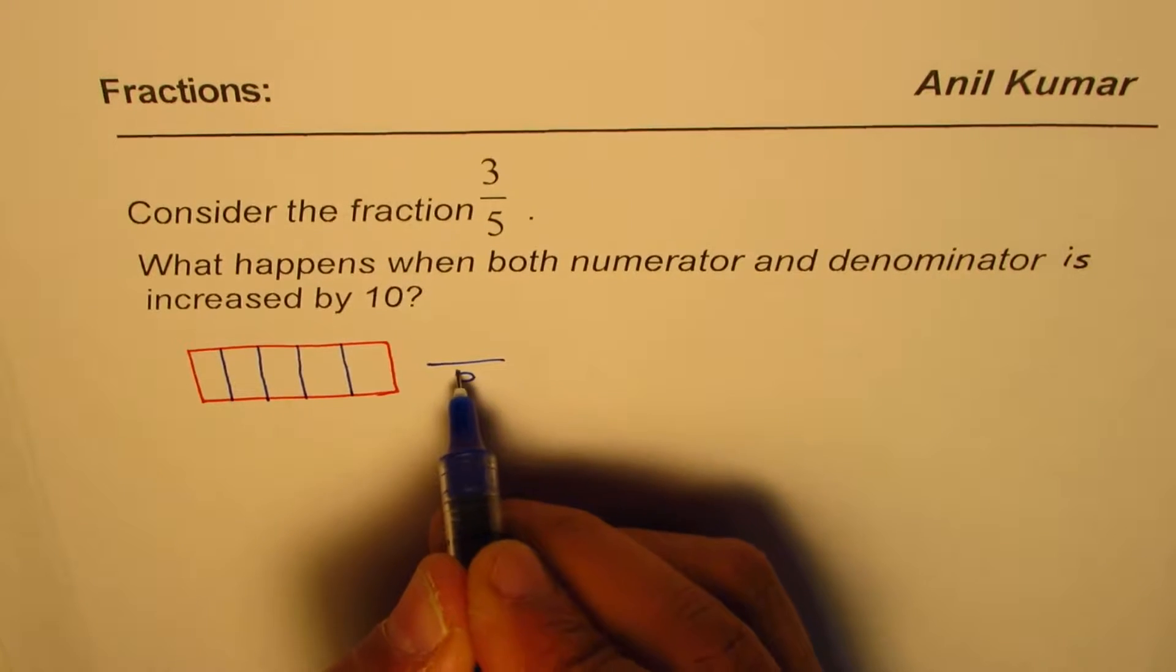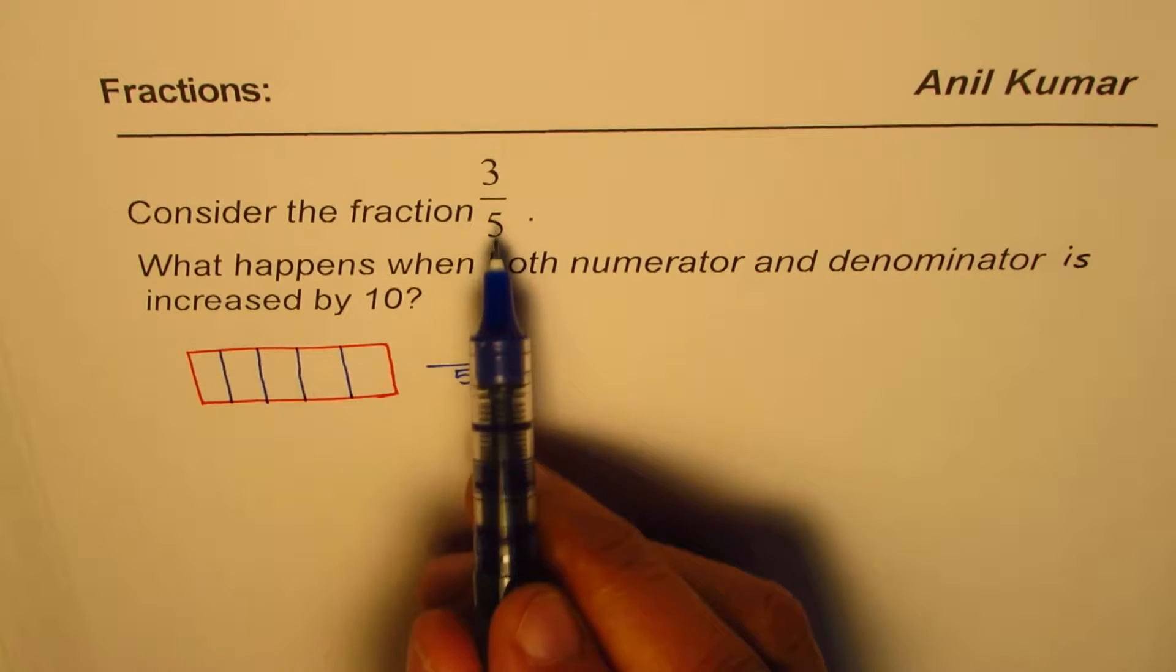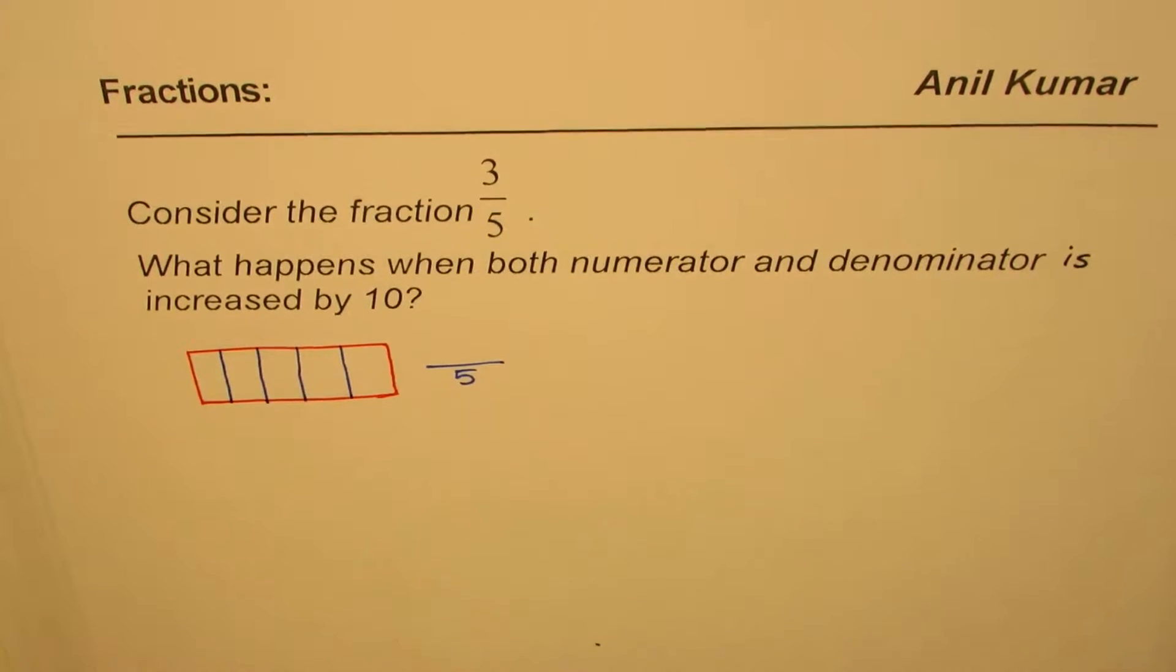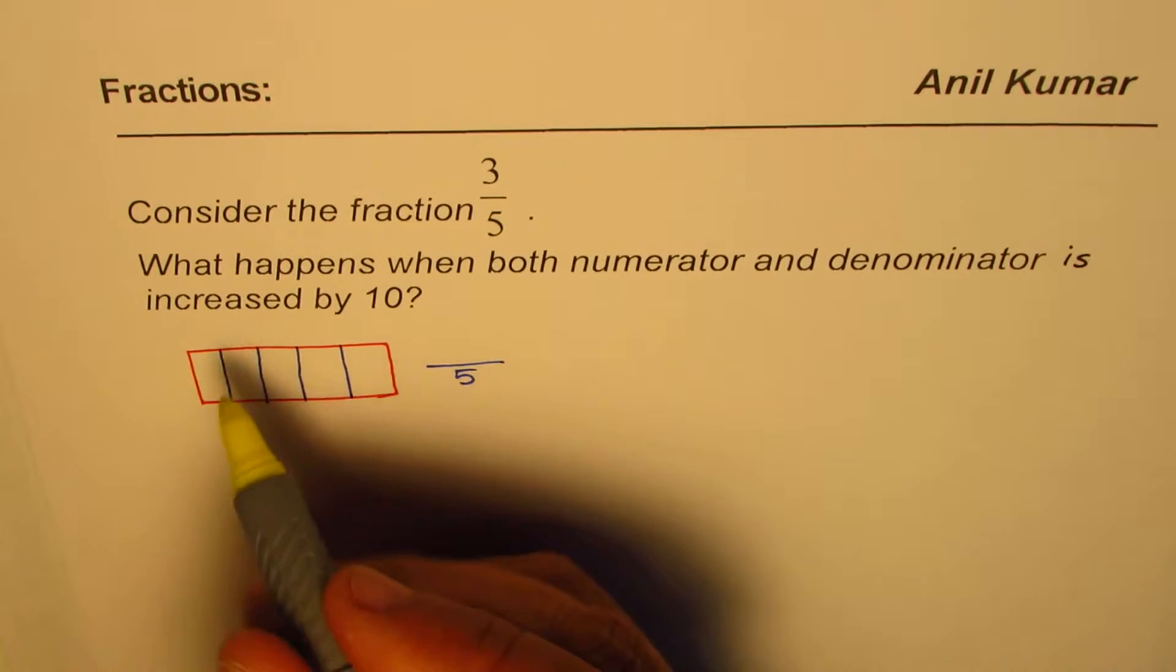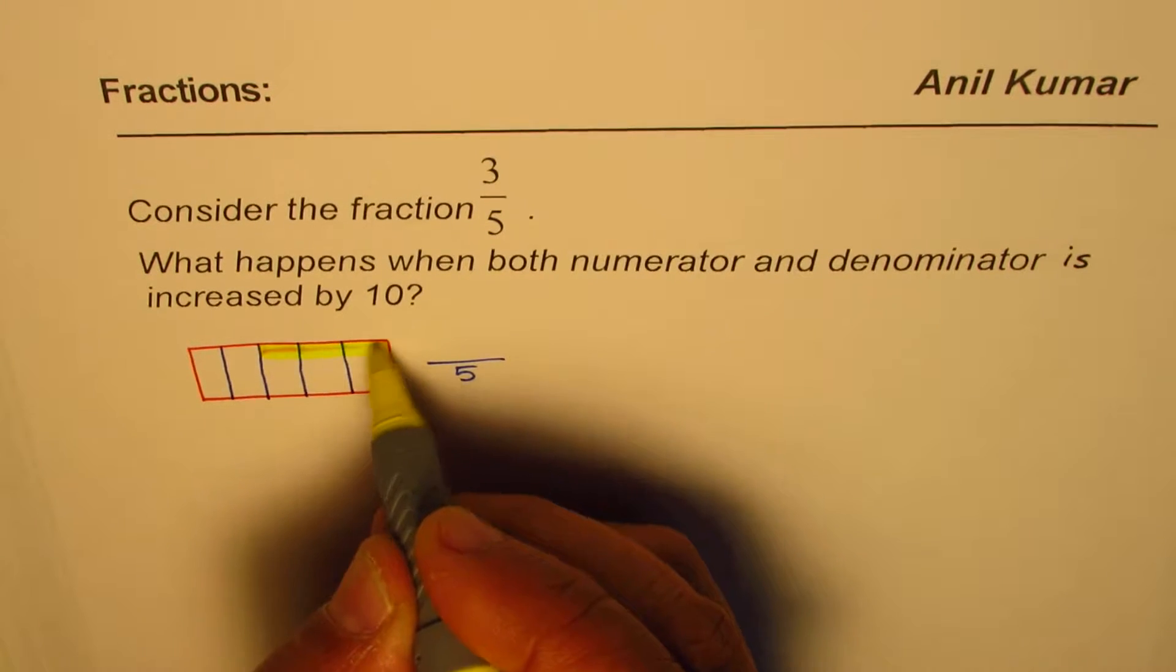I could write 5 in the denominator, that means 5 equal parts. Now when we say 3 out of 5, we have to select 3, right? So let us select 3 out of these 5s. So let me select these 3, it seems to be a bigger part here, so why not?